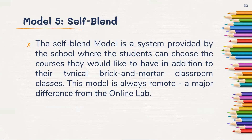The self-blend model is a system provided by the school where the student can choose the courses they would like, in addition to their typical brick-and-mortar classroom classes. This model is always remote, a major difference from the online lab. Students can learn on their own — at home or any place they want — as long as they follow instructions given by their teacher or instructor, making use of internet platforms to facilitate their learning.